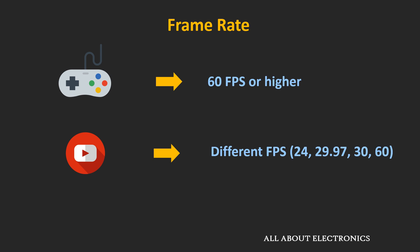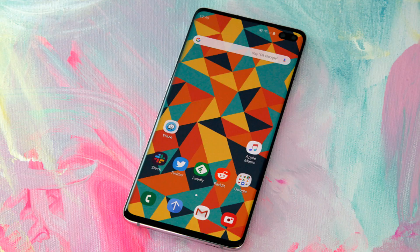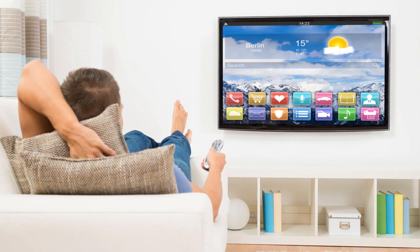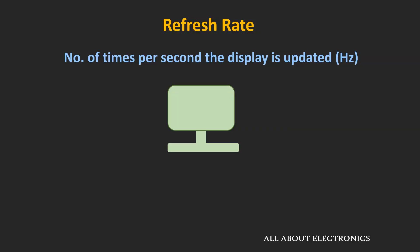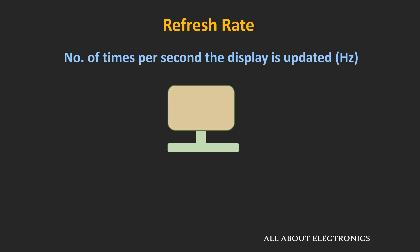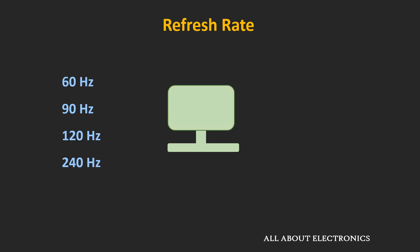When we watch or interact with this content on our smartphone display or on the television, the refresh rate comes into the picture. The refresh rate defines how many times per second the display is getting updated. For example, if a television display has a refresh rate of 60 Hz, it means the display will get updated 60 times per second. The typical refresh rate of today's monitors and televisions is 60 Hz.